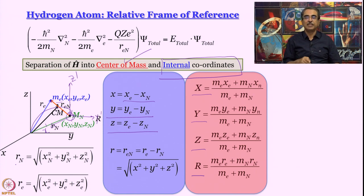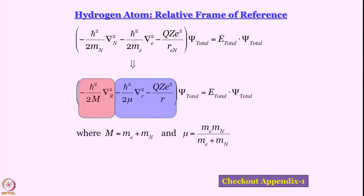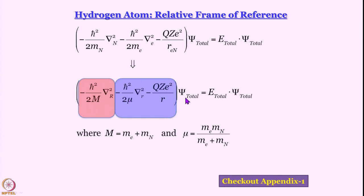When we write the Schrödinger equation in the relative frame of reference and perform formal separation of variables, we get two equations: one in terms of the center-of-mass coordinate (containing capital M — total mass, practically the proton mass), and one in terms of the relative coordinate r (containing μ — reduced mass, practically the electron mass). The potential energy term appears only in the relative coordinate equation.